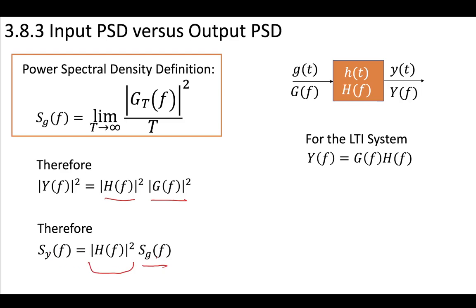So take your input, take the power spectral density of your input, multiply it by your transfer function squared, and that gives you the output power density. This is very similar to the energy spectral density relationship we saw previously.